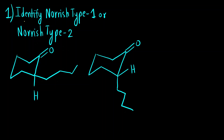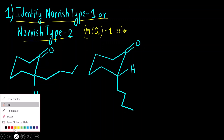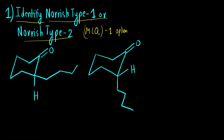The first question is to identify Norrish type 1 or type 2. There were two molecules given; it was an MCQ type question with only one correct option. So first of all we must know what happens in a Norrish type 1 and Norrish type 2 reaction.